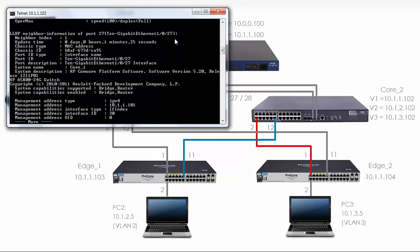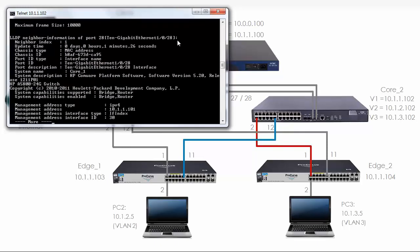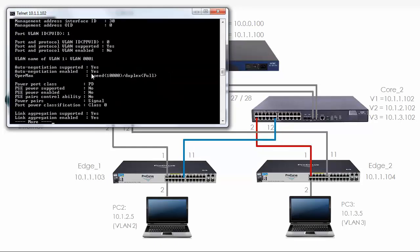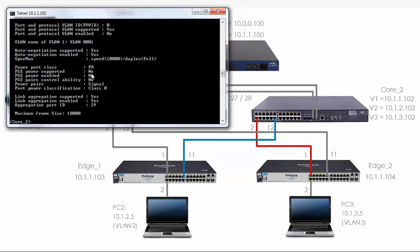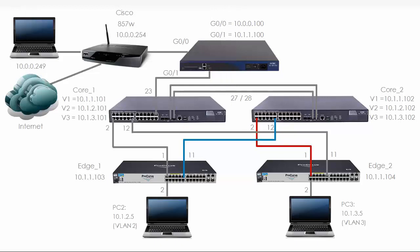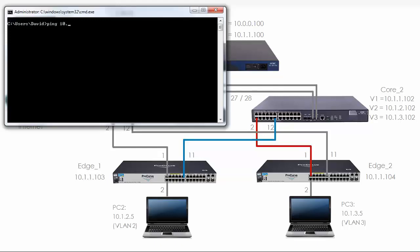We once again have our 10GB interfaces: port 27 connected to core 1 on port 27, and port 28 connected to port 28 on core 1. The cabling looks good. Let's see if we can telnet to edge 1 and edge 2. Can I ping 10.1.1.103? At the moment I'm not able to ping the switch.